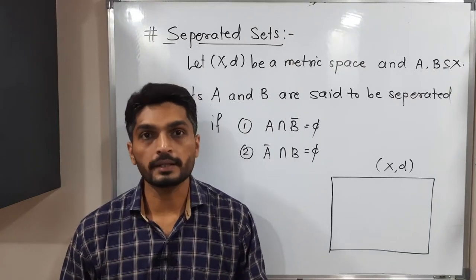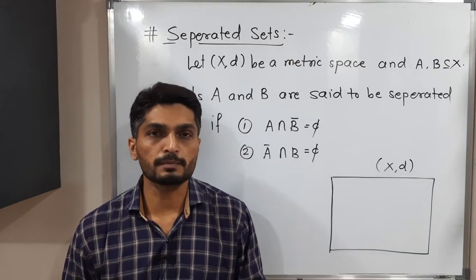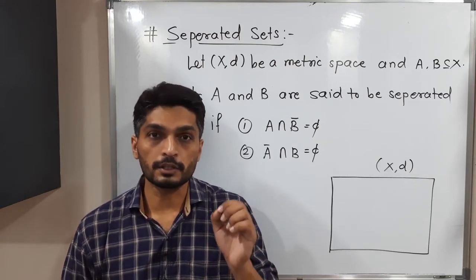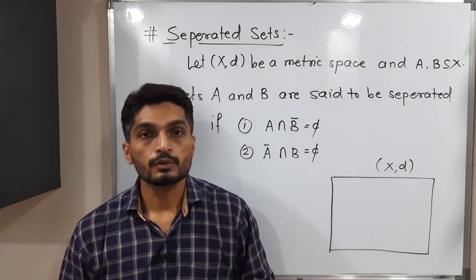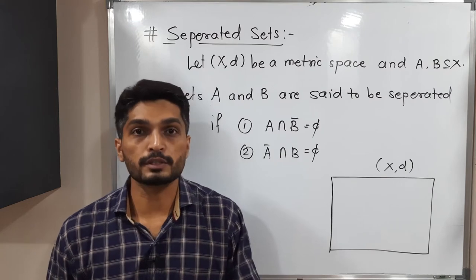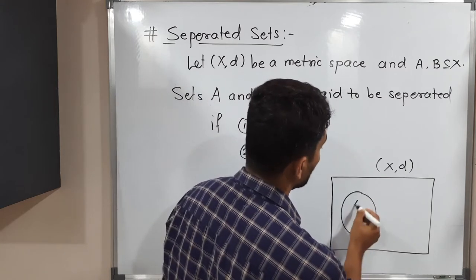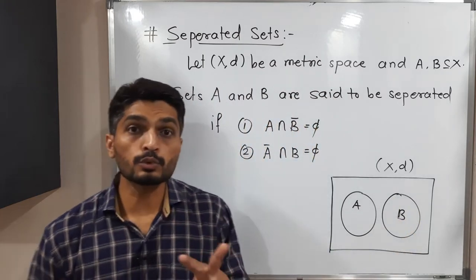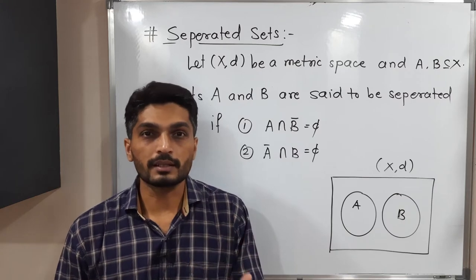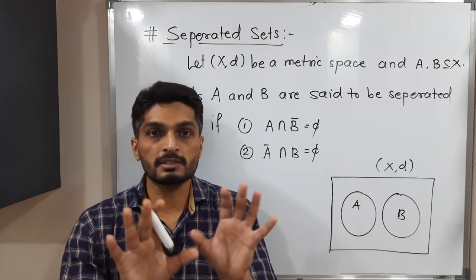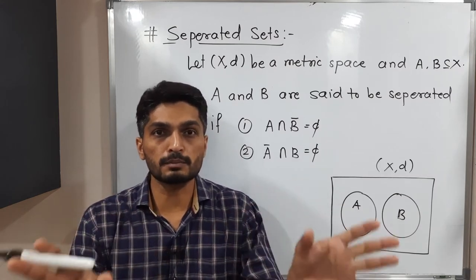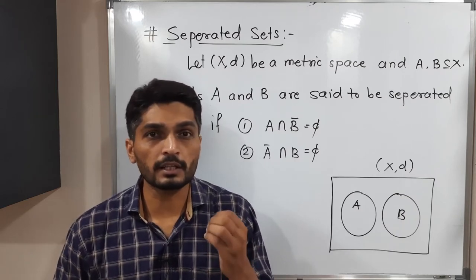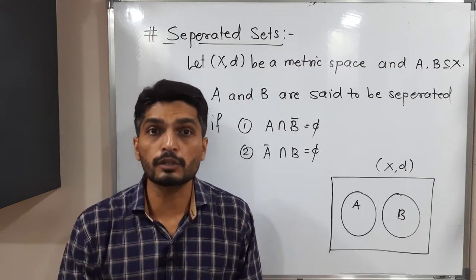Let us discuss the concept of separated sets. You are familiar with the metric space (X, D) — a non-empty set X with a function D satisfying four conditions. We have such a metric space and two subsets A and B. In general English we can understand two sets are separated means they are separate — there is some distance between them. Let us discuss the mathematical concept and actual mathematical meaning behind it.